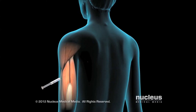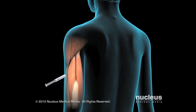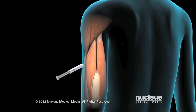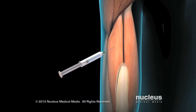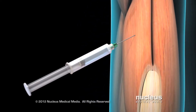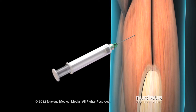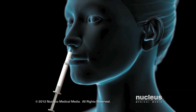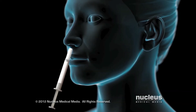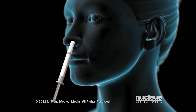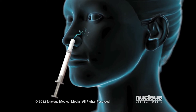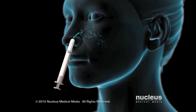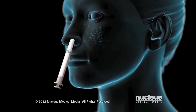The best way to protect yourself from the flu is to get the flu vaccine every year. You may receive the vaccine as a shot, which contains dead versions of several types of the virus, or as a nasal spray, which contains several types of live, but very weak, forms of the virus.